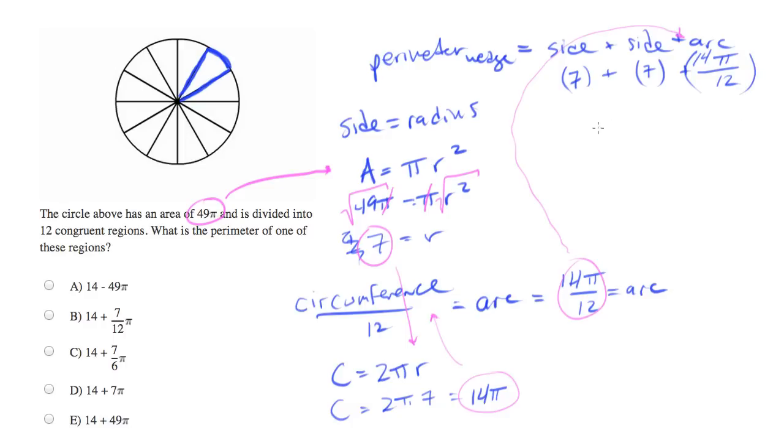So this, if we sum it all up, and I'm looking at the answer choices now to make sure I put it in the right form, will be 14 plus 14 pi over 12. And this wants to be simplified. So let's divide both of those by 2. We'll get 7 pi over 6.